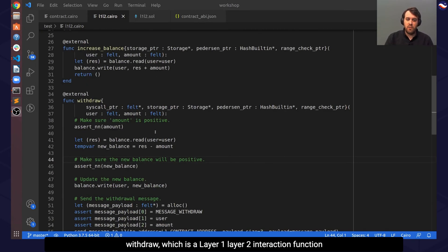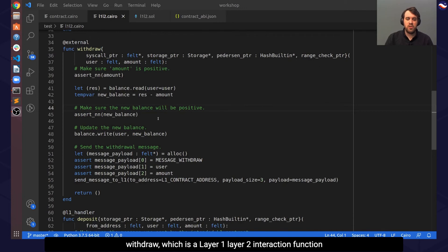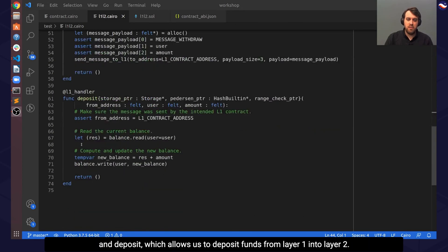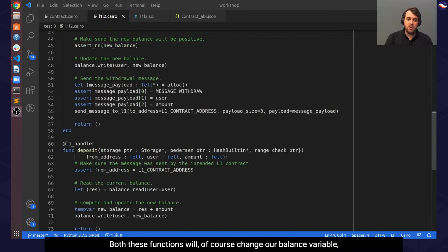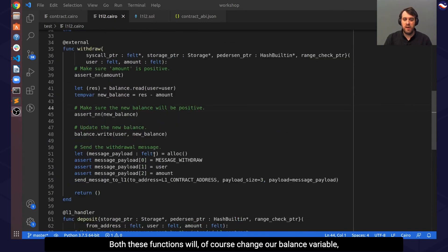Withdraw, which is a Layer 1, Layer 2 interaction function that allows us to transfer funds from Layer 2 back to Layer 1, and Deposit, which allows us to deposit funds from Layer 1 into Layer 2. Both these functions will, of course, change our balance variable, which we've already discussed before, increasing or decreasing the balance accordingly.